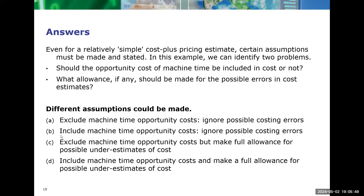Option two: include the machine time opportunity cost, but still ignore the possible costing errors of plus or minus 15% and plus or minus 10%. Option three: exclude machine time opportunity cost, but make full allowance for costing errors. Option four: include opportunity cost and make full allowance for possible errors in the costing. So you can have four different sets of answers for this simple scenario.